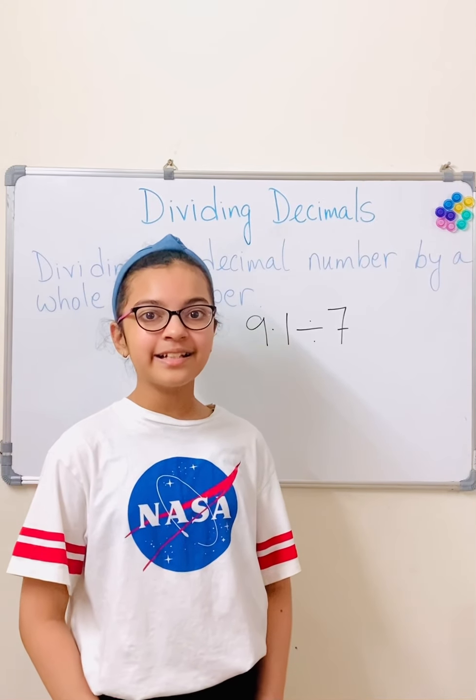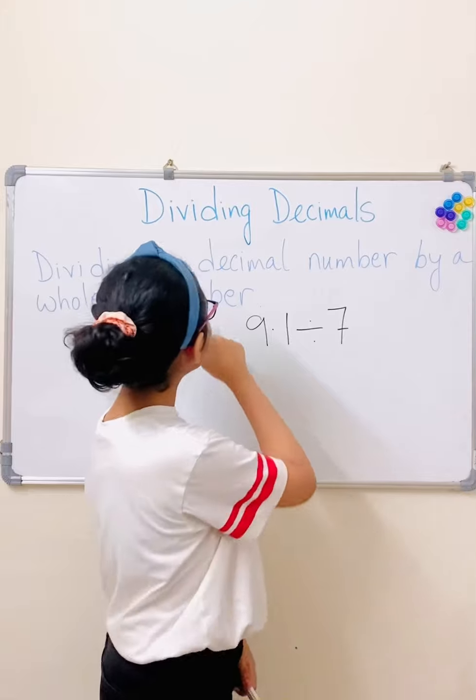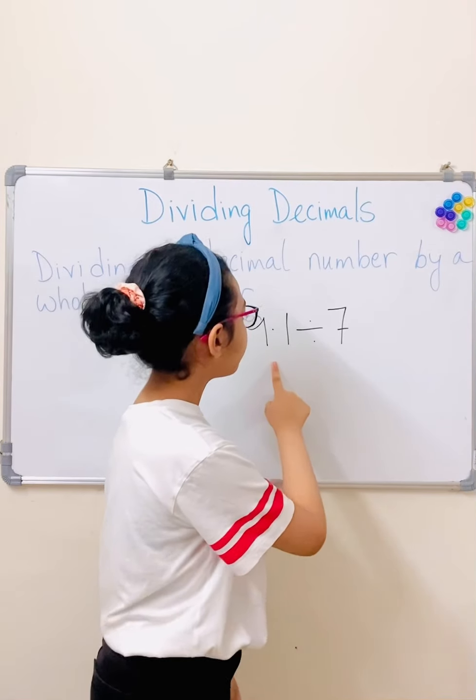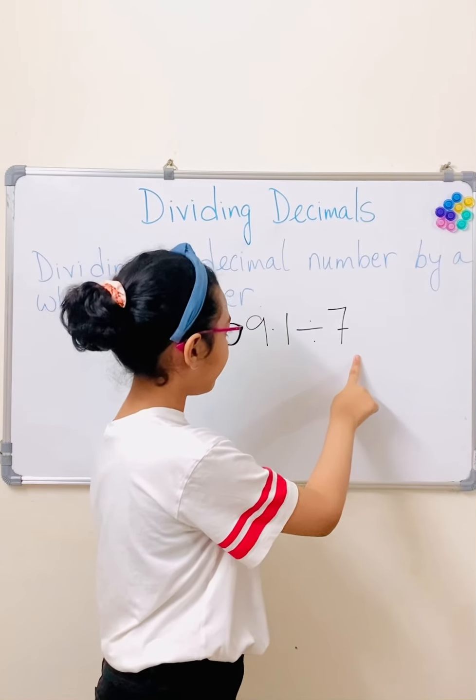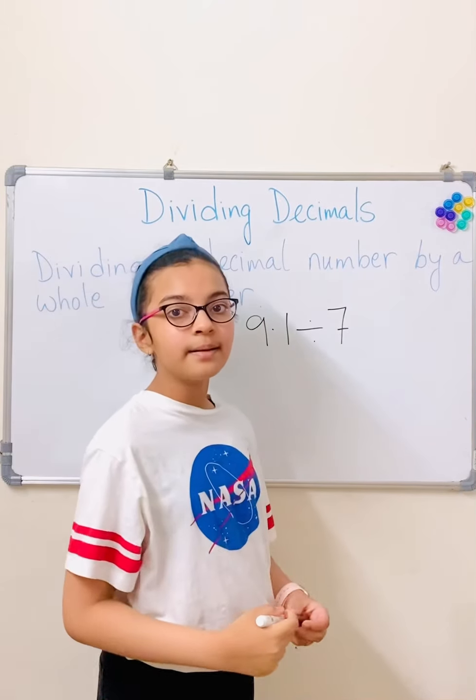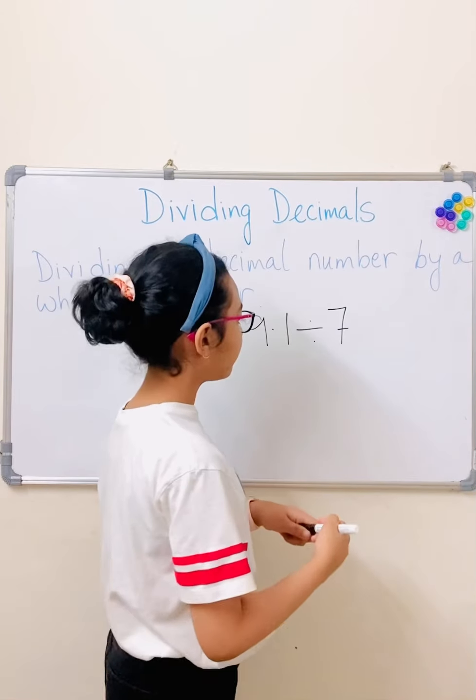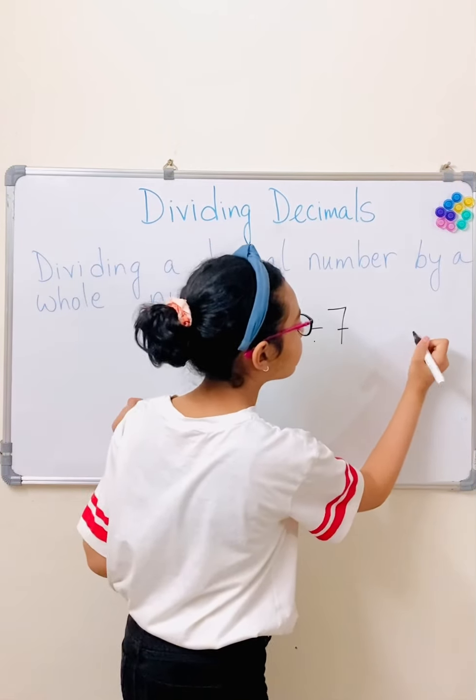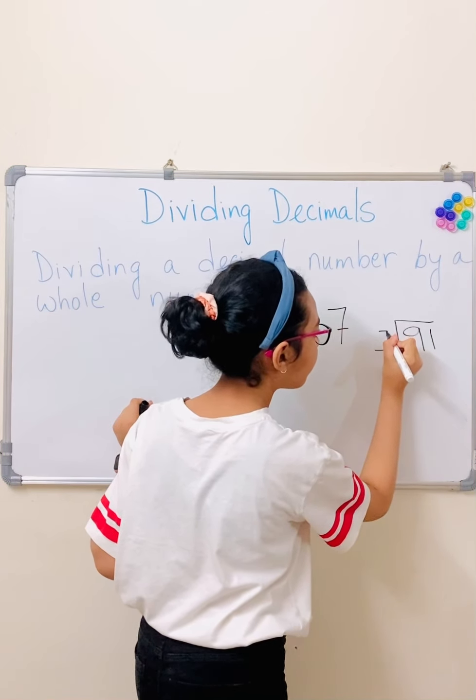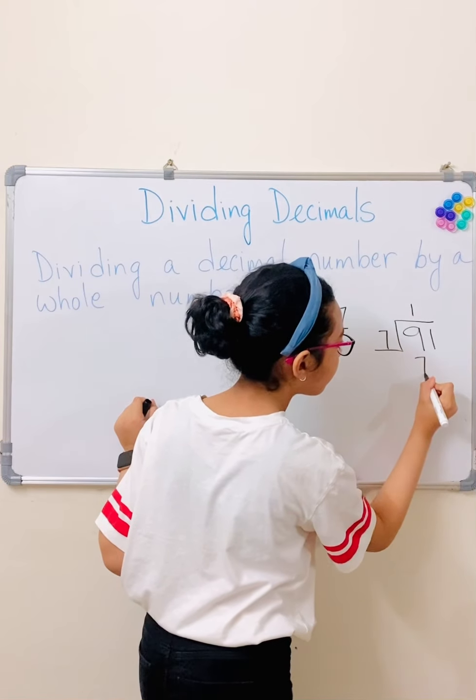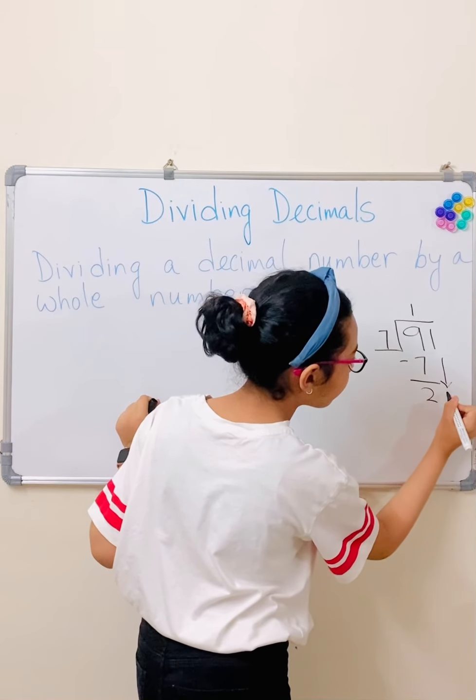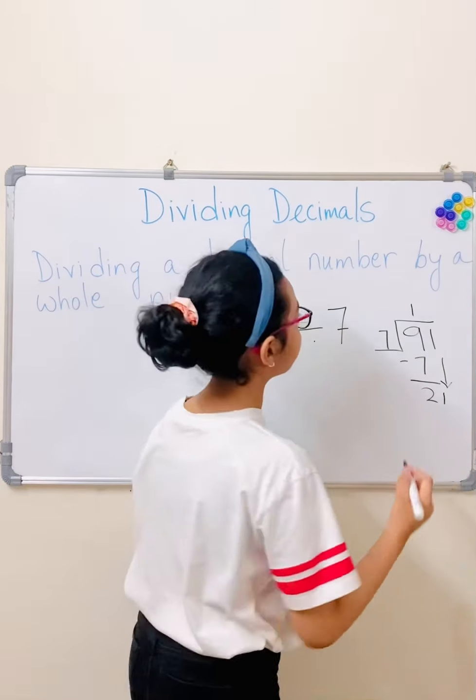Okay, so now here's the last trick, guys. So it's dividing a decimal number by a whole number. So you can take 9.1 divided by 7. But now we just ignore the decimal. So imagine it's not there. And that becomes like 91 divided by 7. So let's start. Okay, we'll do it here.